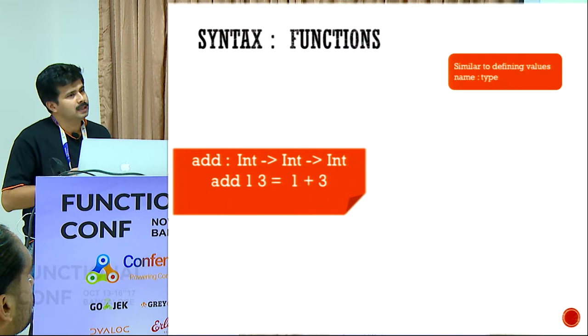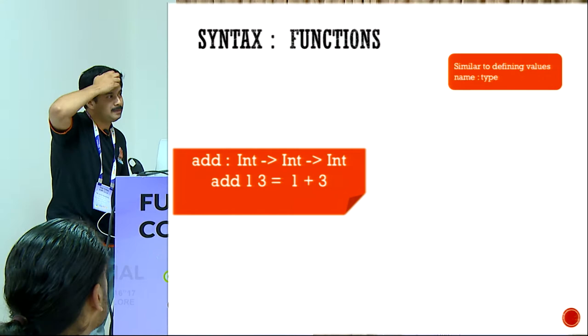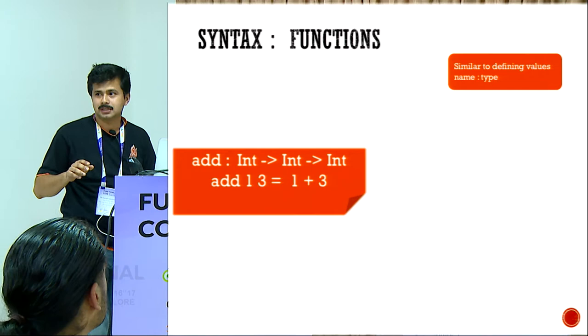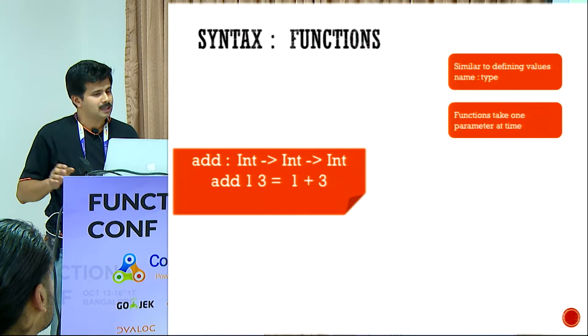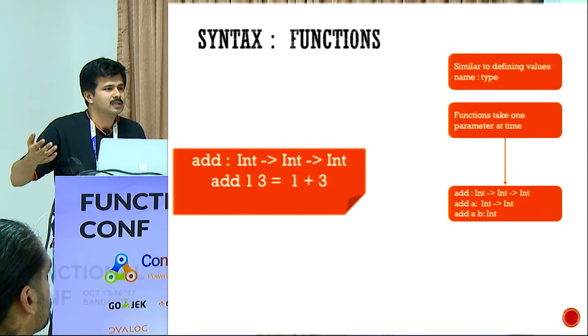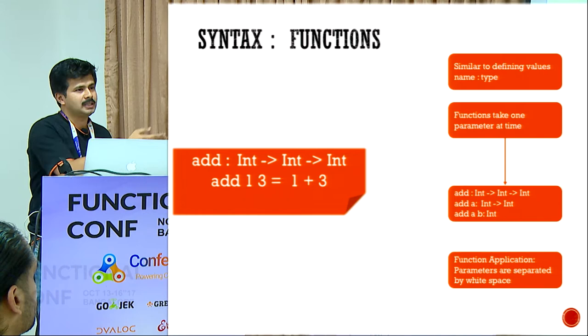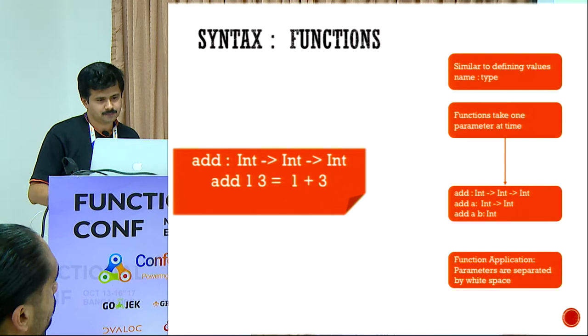Here's an example: you have an `add` which takes two parameters and returns a third one — it's the same as defining values. But actually all functions take one parameter. So `add` takes one integer and returns a function which takes another integer which returns an integer. If you pass two then you get the final one. This is all functions taking a single parameter — it's the same as currying. And of course, how you invoke is by whitespace — there are no parentheses. So `add 1 3` is how you invoke functions.